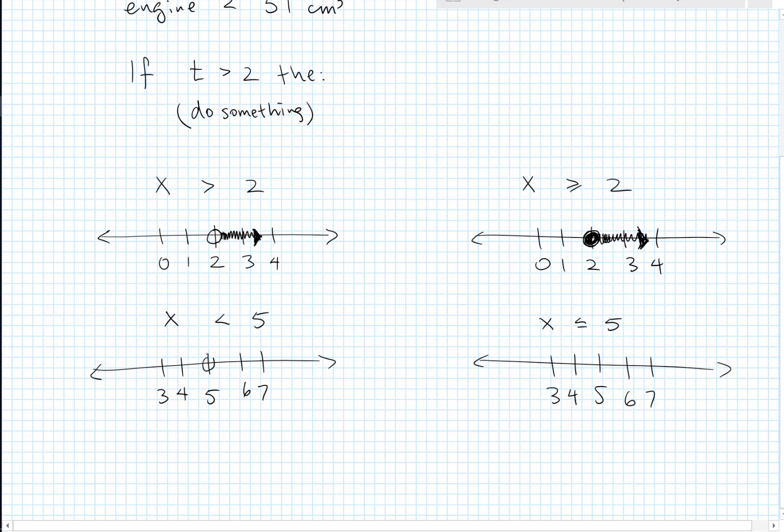And a hollow circle for x is less than 5, and shade in everything to the left with an arrow. And then a solid circle for x is less than or equal to 5, and shade in everything to the left.